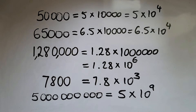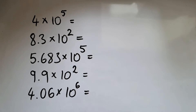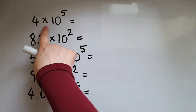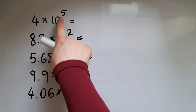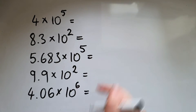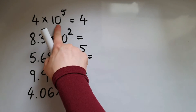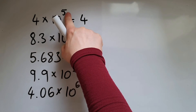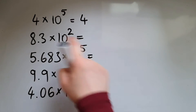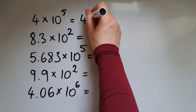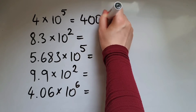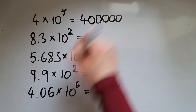We'll now try doing the opposite — converting from standard form to ordinary form. So we've got 4 times 10 to the power of 5. We'll rewrite the 4 and then add the number of zeros that the power tells us to, which would be 5 zeros.